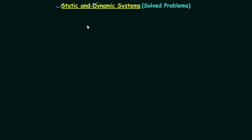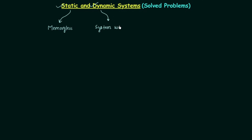In this lecture we will continue with our practice, but first I want to explain one important point related to static and dynamic systems. Static systems are also known as memoryless systems, and dynamic systems on the other hand are also known as systems with memory.